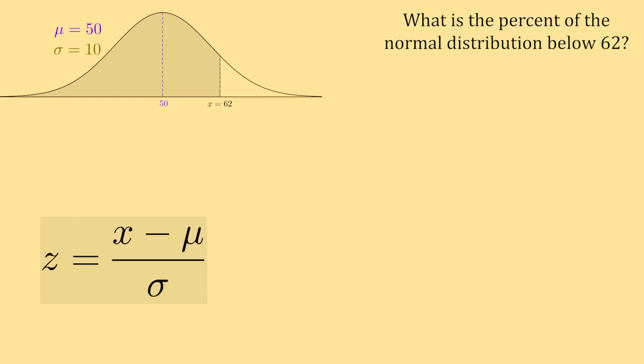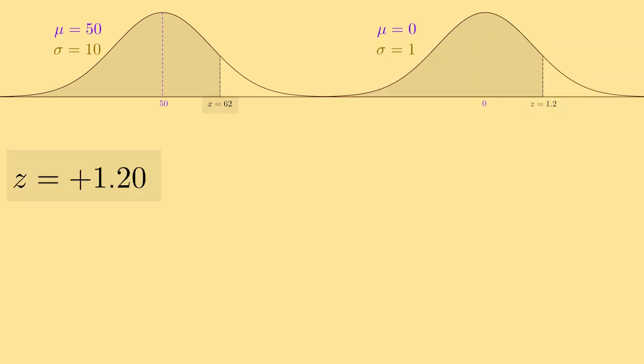Plugging them all in, we get 62 minus 50 all divided by 10, which is equal to 12 divided by 10, which equals 1.2. So positive 1.2 is our z-score for 62 in this problem.